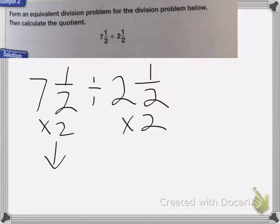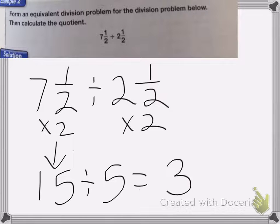And I end up having 7 and 1 half multiplied by 2 is 15 divided by, and 2 and 1 half times by 2 is 5. And 15 divided by 5 is equal to 3.